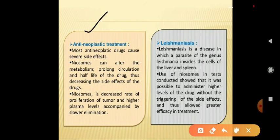Niosomes are also used in anti-neoplastic treatment. Most anti-neoplastic drugs cause severe side effects; niosomes can alter the metabolism, prolong circulation and half-life of the drug, thus decreasing side effects. Niosomes also show a decreased rate of tumor proliferation and higher plasma levels accompanied by slower elimination. Niosomes are also used in leishmaniasis, a disease in which a parasite of the genus Leishmania invades cells of the liver and spleen. Their use allowed administration of higher drug levels without triggering side effects, allowing greater efficacy.